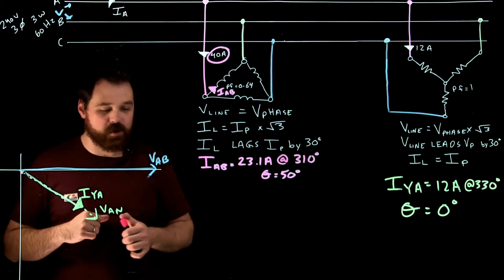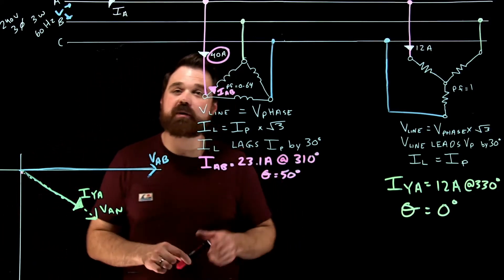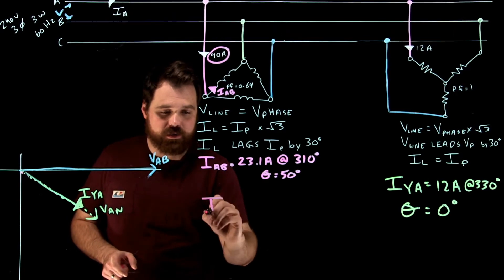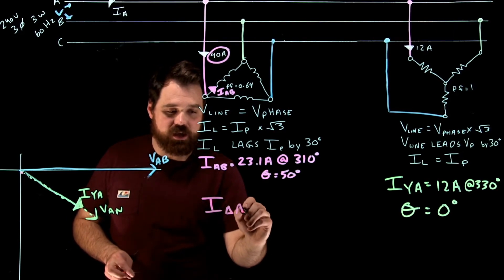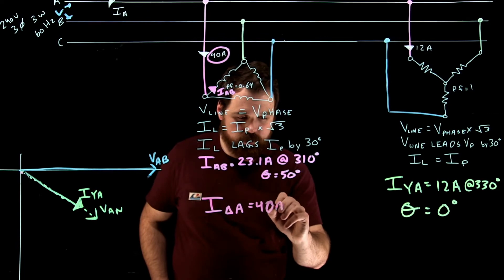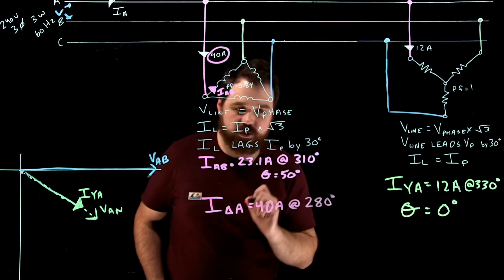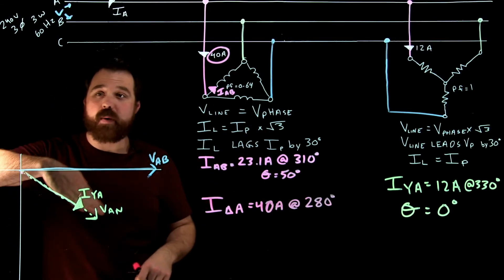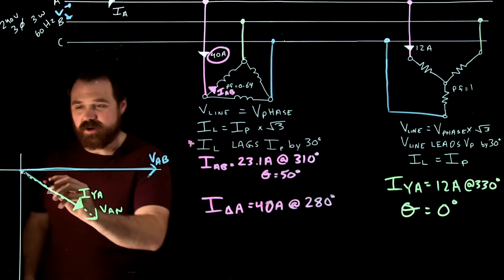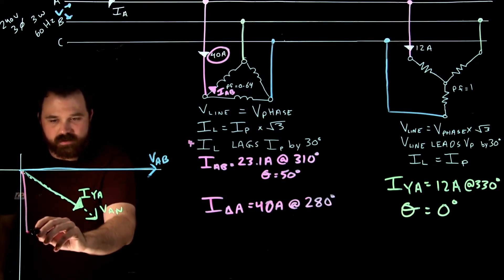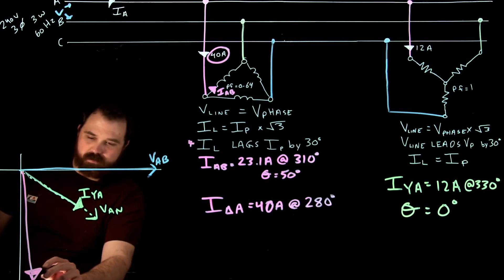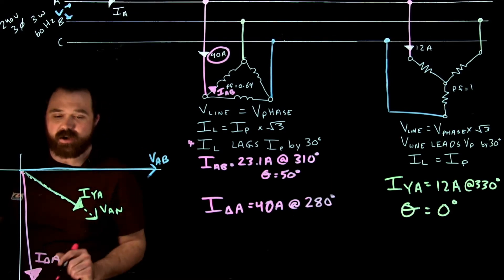Awesome. We're not going to plot that though, because we want to apply some rules now. Our phase current was 23.1 times root 3 gives us that 40 amps. So our I delta A, our line current of line A of delta, is 40 amps. And it is actually going to be at 280 degrees. So we got a 50 degree lag because of our power factor, plus a 30 degree lag because our line current lags our phase current by 30, which puts me down here. Here's my I delta A, obviously not to scale.